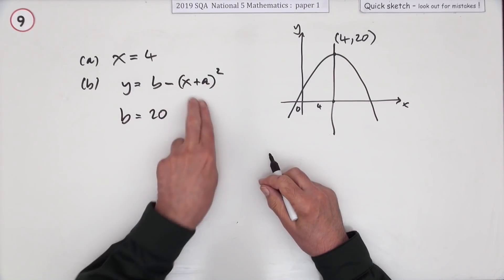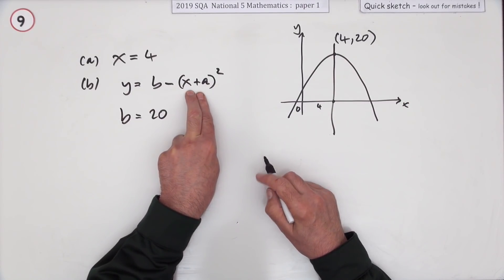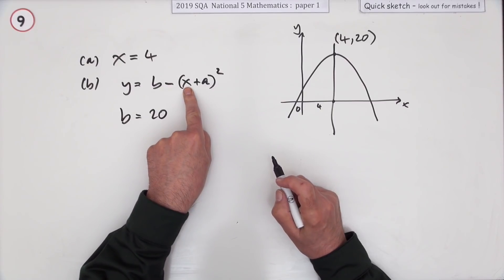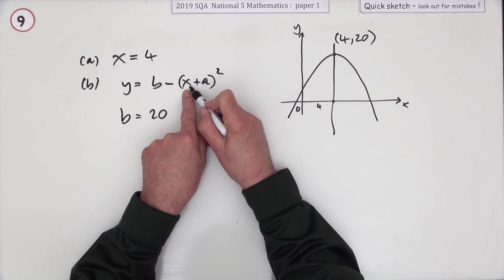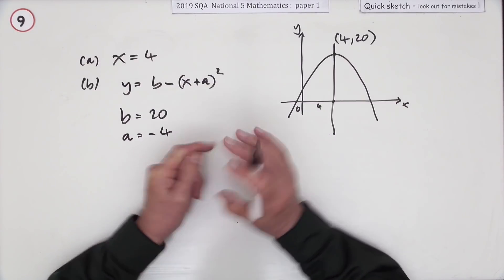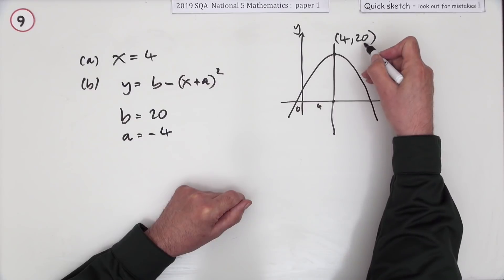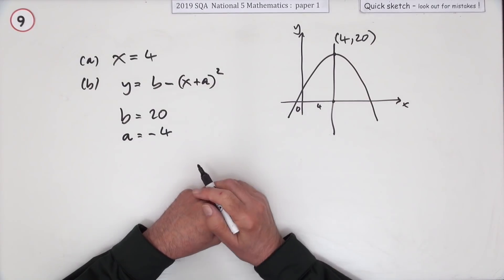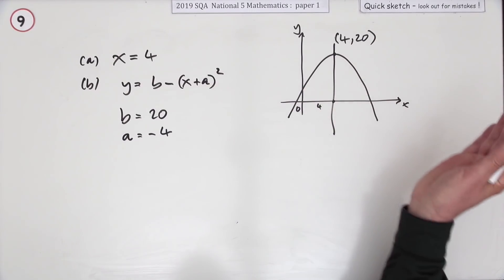When will it be 20? It'll be when this bracket is 0. That happens when x is 4. If x is 4, a would have to be negative 4. You probably just remember it as it's the same as that but the opposite of that. That's it for the three marks.